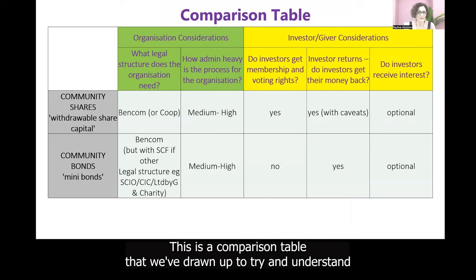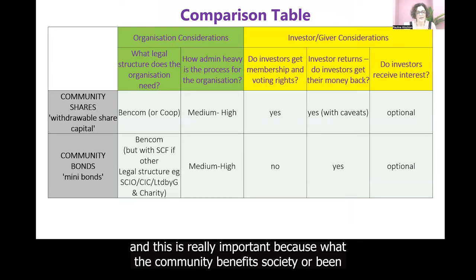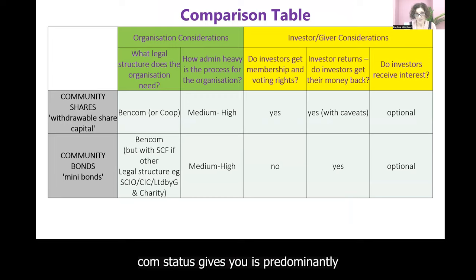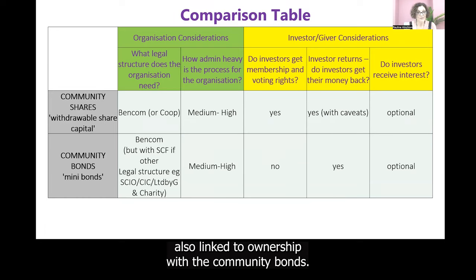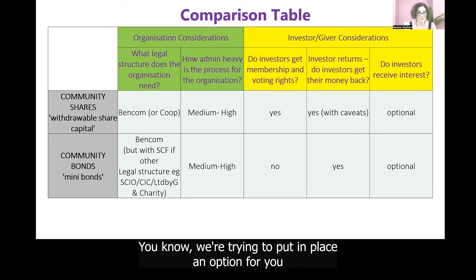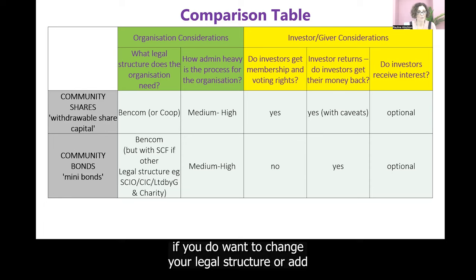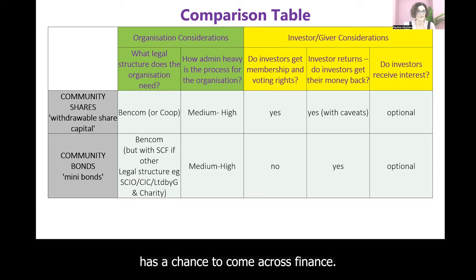This is a comparison table showing differences and similarities between bonds and shares. For community shares, the required legal structure is a Community Benefit Society or Bencom, which gives you the right to raise investment, and it's also linked to ownership. For community bonds, if you have an existing structure you can use it, and we're trying to put in place an option for those who don't want to change their legal structure. It's important that everybody has a chance to do democratic finance.